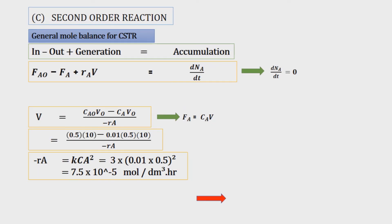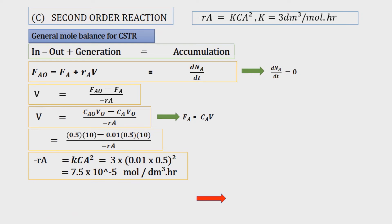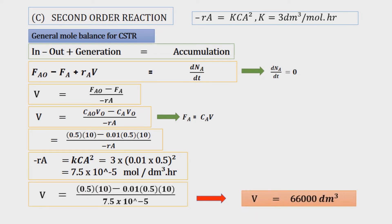For Question C, negative Ra equals K times CA squared. This involves second order of reaction. For CSTR, same as Questions A and B, we make V the subject, substitute the values, and we get 66,000 decimeter cubed.